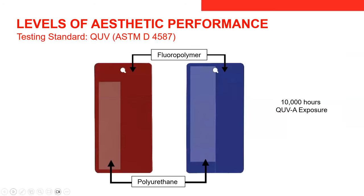Here we're showing the level of aesthetic performance: testing via QUV after 10,000 hours of exposure. You're seeing a fluoropolymer on the right of both panels versus a polyurethane on the left. While the color hasn't changed much in the picture, you're going to see more on the gloss change that has happened, and gloss can play a huge factor in degradation of a coating system.